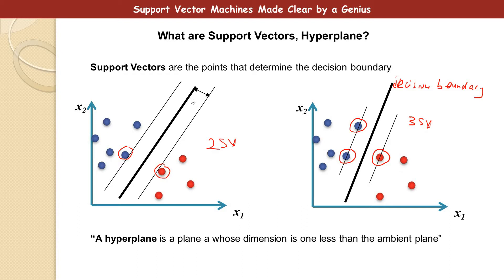If you have data scattered in 3 dimensions, the hyperplane is going to be a 2-dimensional plane, and so on and so forth.